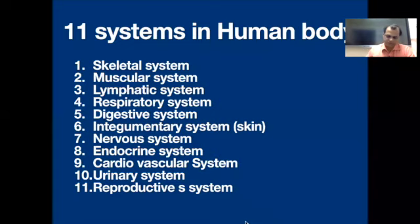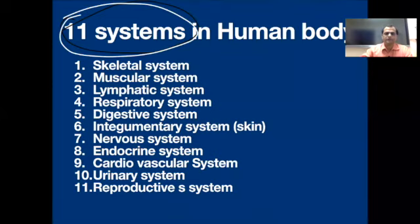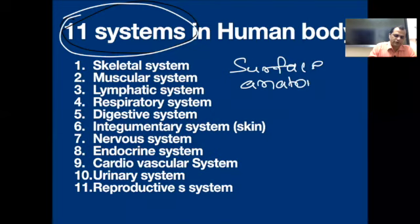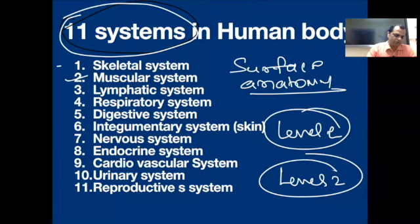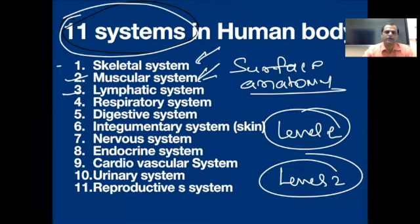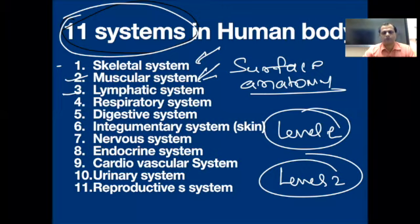So dear friends, we have to discuss what we need to understand. We will go through these 11 systems. We will discuss regarding the bones in the skeletal system. The muscular system is connected with the muscles and the movement. The lymphatic system is connected with immunity and lymph circulation.